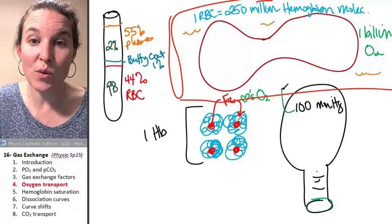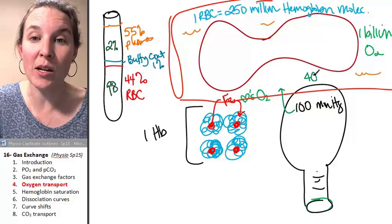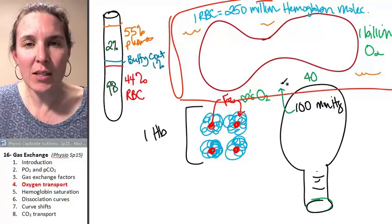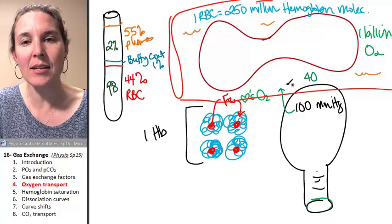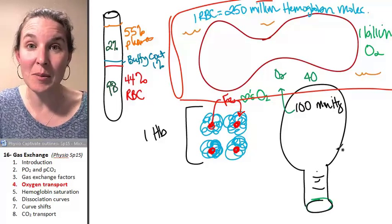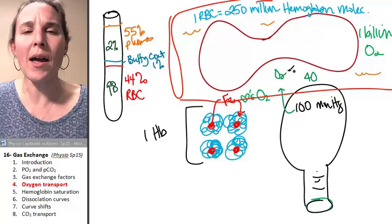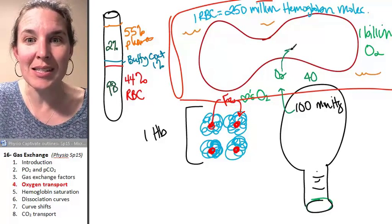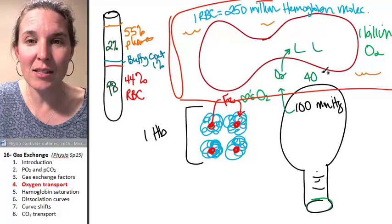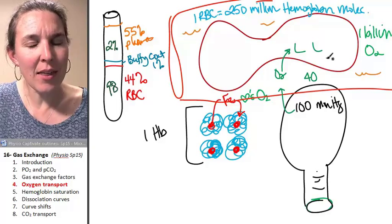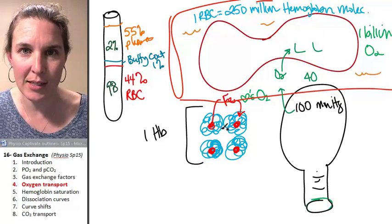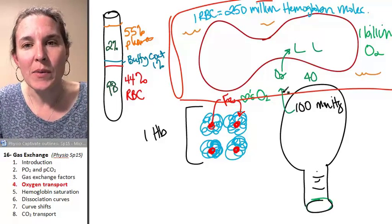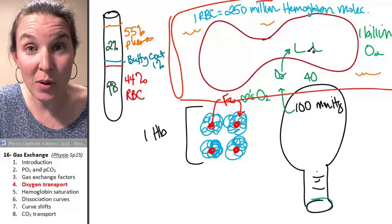So watch what happens. Oxygen is going to diffuse into the plasma where the partial pressure gradient was 40. And of course, it's going to diffuse in. It's almost instantaneous that the oxygen that's now in the plasma is going to go, why would I go down this water slide of plasma when there's an awesome seat inside this red blood cell bus that I can sit on? I'm just going to go in and sit on this hemoglobin seat. And I'm taking four of my buddies with me. And so the oxygen almost immediately says, I'm not hanging out here, and goes into the red blood cell and sticks there.